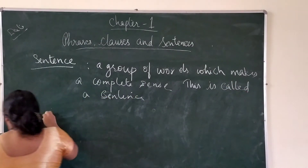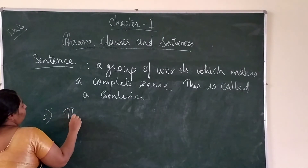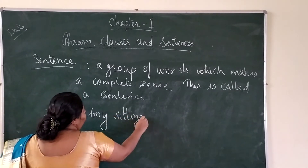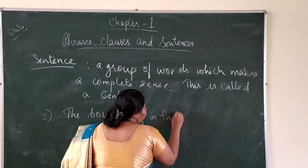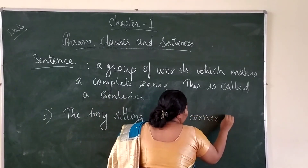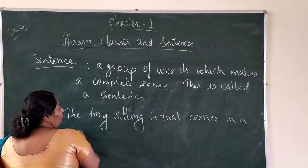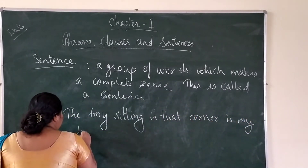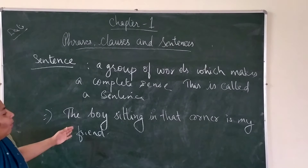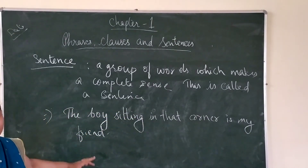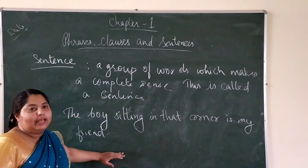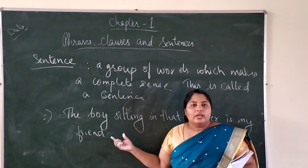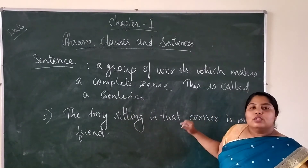For example: 'The boy sitting in that corner is my friend.' So 'the boy sitting in that corner is my friend' is a complete sentence which helps us to know that this is a sentence — it includes phrases, clauses, and forms a full sentence. Hope you all understand what phrases, clauses, and sentences are.